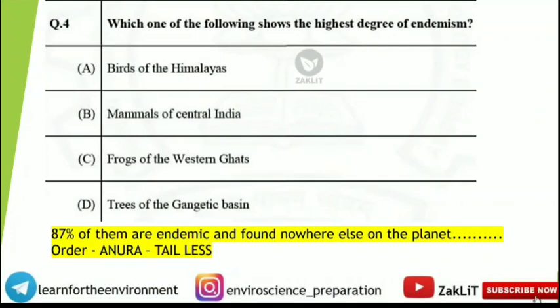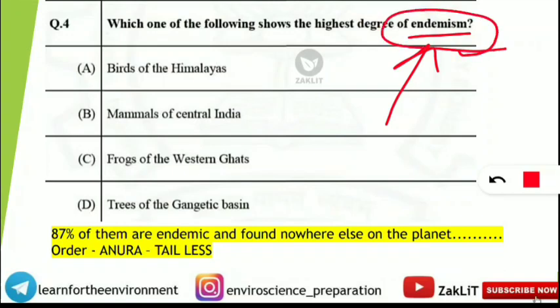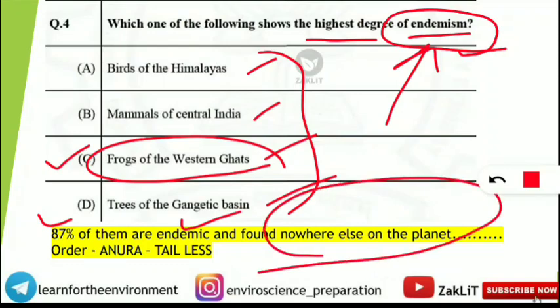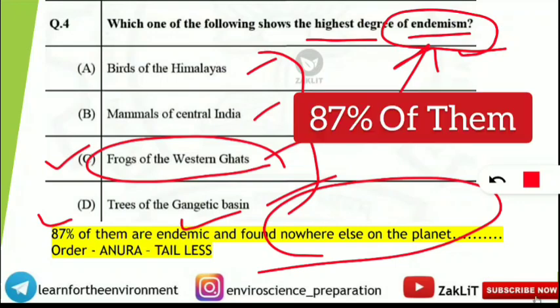The next question asks: which one of the following shows the highest degree of endemism? Endemism refers to organisms constrained to or found only in a particular location — those are called endemic species. The options are birds of the Himalayas, mammals in central India, frogs in the Western Ghats, or trees in the Gangetic Basin. The correct option is C: frog diversity is very high in the Western Ghats, and endemism is highest because 87% of frogs in the Western Ghats are endemic and found nowhere else on the planet.